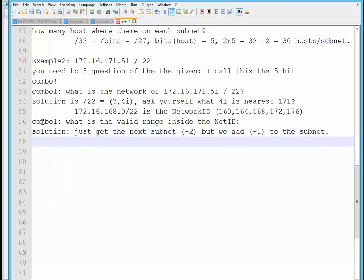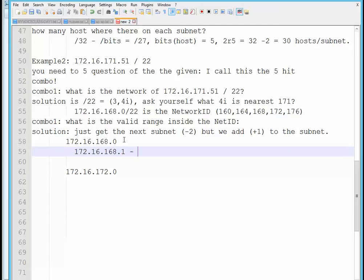So if our subnet would be 172.16.168.0, the next subnet is 172.16.172.0. So if we add one from this subnet, it's going to be 172.16.168.1, all the way to we subtract two here